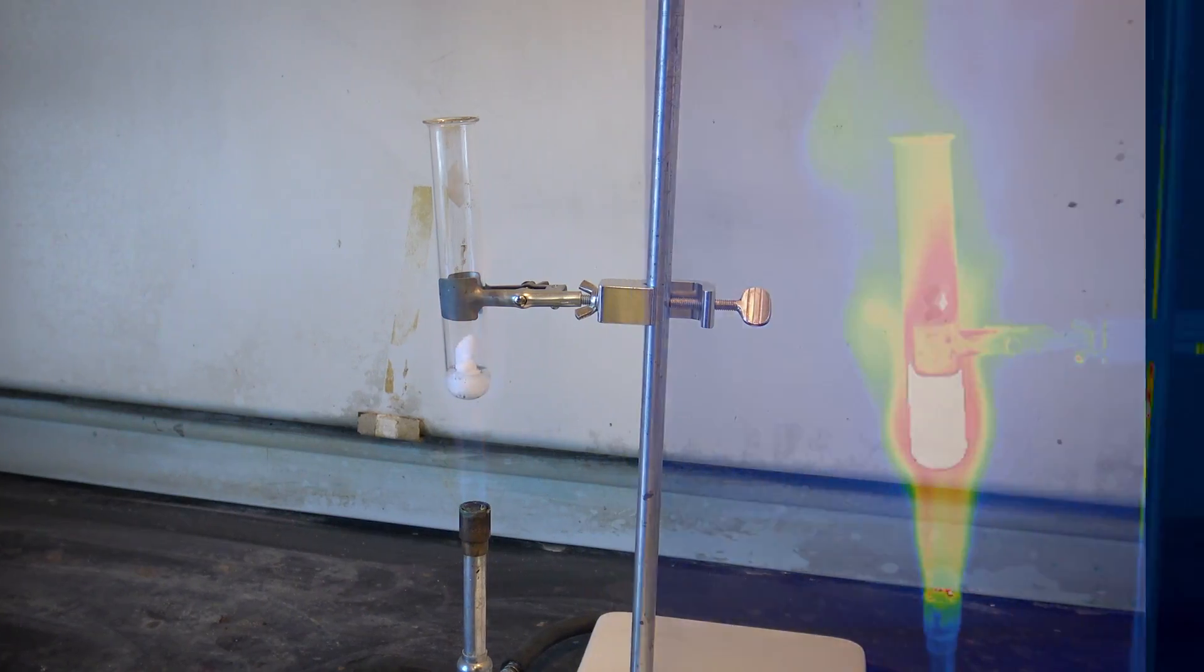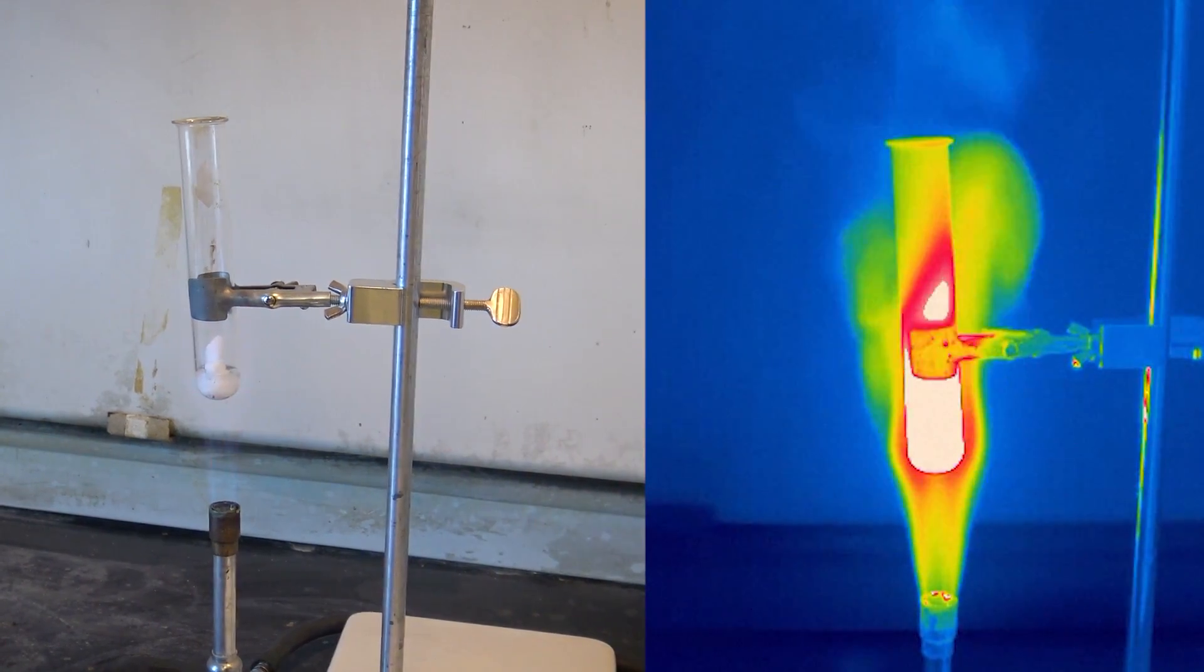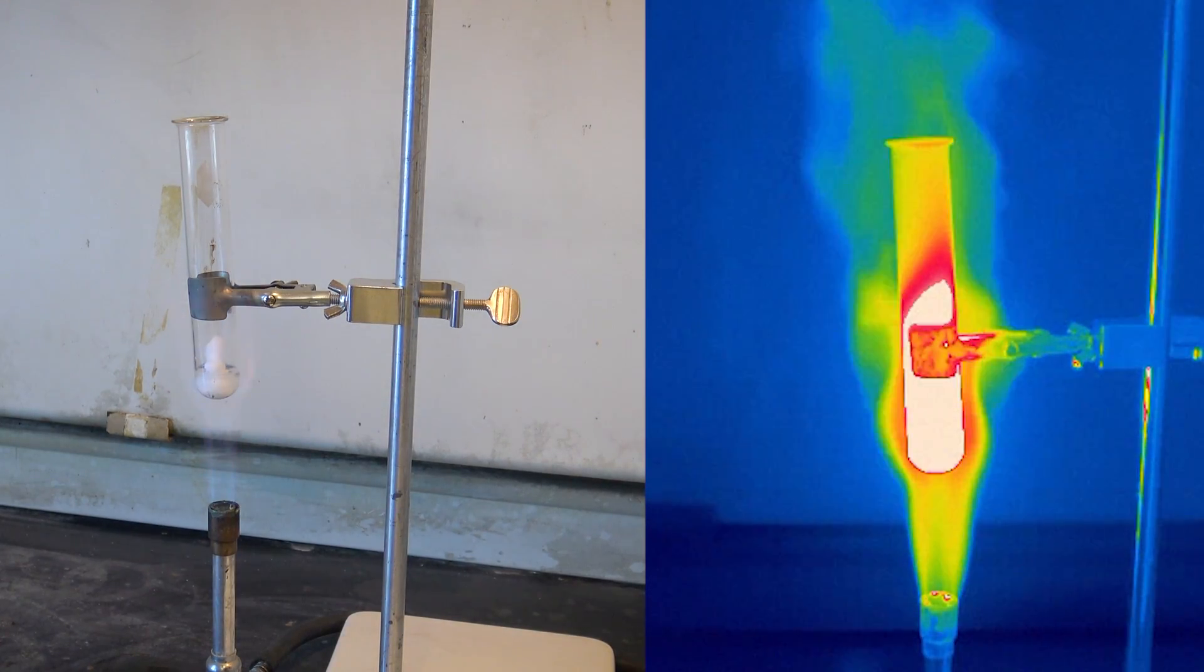What we're trying to do is to get the sodium chlorate to turn into a liquid. That way it will release the oxygen when we drop our sugar inside of there. Look at it.